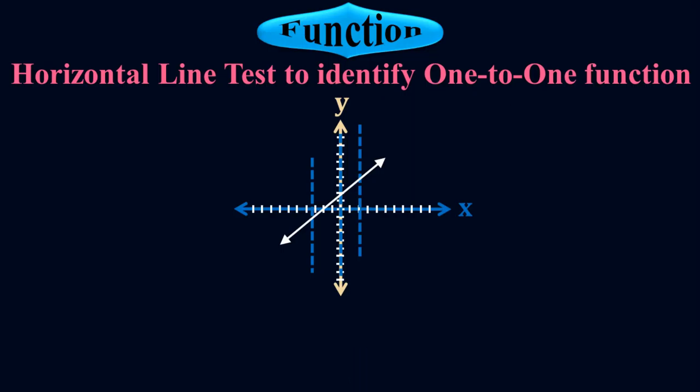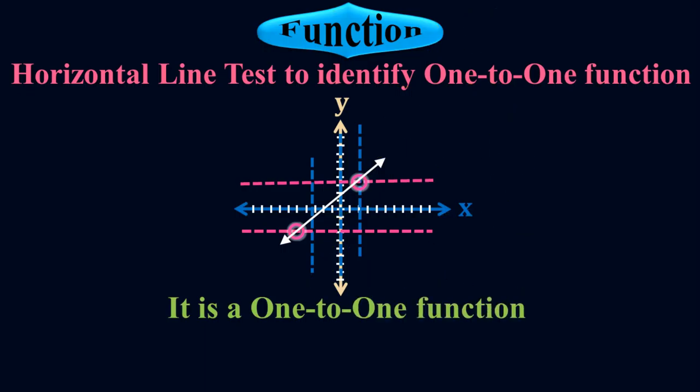Now it comes to the real part, which is the horizontal line test. Let me apply the horizontal line test here. Both horizontal lines pass through the graph at single points — they only touch the graph once. Therefore it is a one-to-one function. If a horizontal line passes through the graph at more than one point, then it is not a one-to-one function.